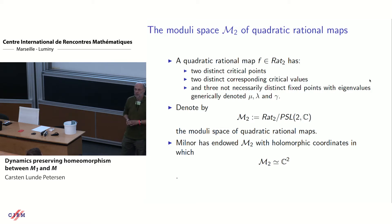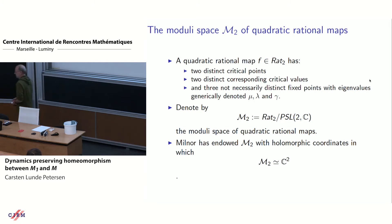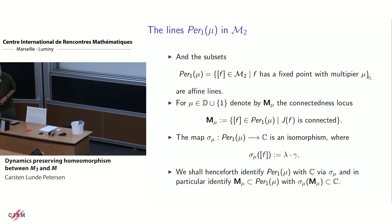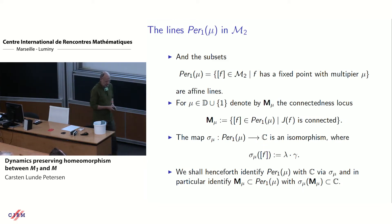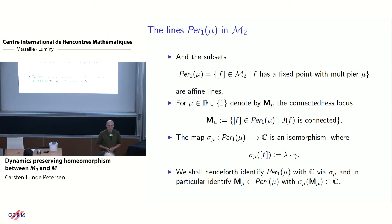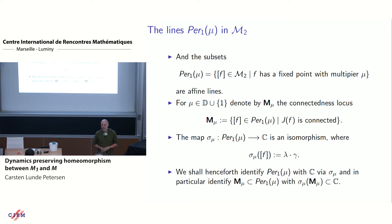Milnor set up the whole machinery to do this. He also defined these lines that he calls P1 mu, which are the set of equivalence classes for which you have a fixed point with a multiplier mu. It turns out that in these natural coordinates, these are straight lines, so we call them affine lines.